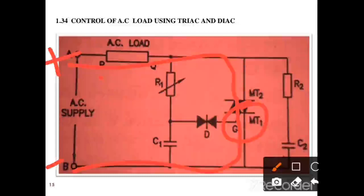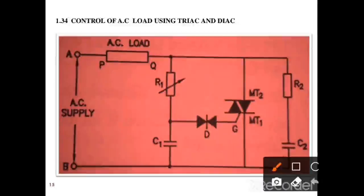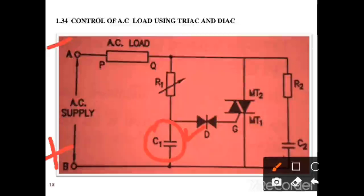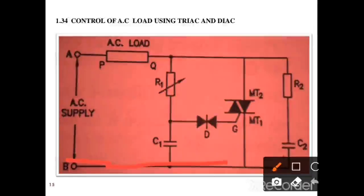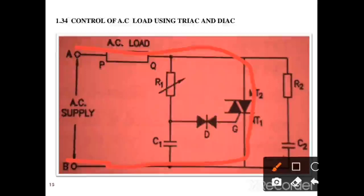During the negative half cycle, when B becomes positive with respect to A, the capacitor charges in the opposite direction. When the capacitor voltage exceeds the Diac's breakover voltage, the Diac triggers and the load current flows from B through the Triac and through the load back to A. This is how the circuit works when we use Triac and Diac for AC load control.